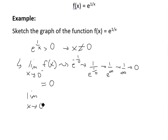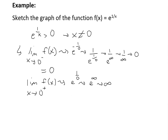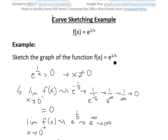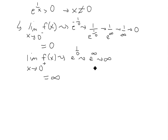When we approach from the right side — x approaching 0 from the positive side — we're putting in a positive 0, so 1 over 0 is like positive infinity. This gives us e to the infinity, which goes to positive infinity. So this limit equals positive infinity.